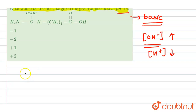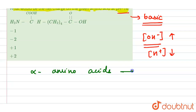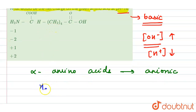We know that in a basic solution, alpha amino acids exist in the anionic form. So here we will talk about this anionic form of the amino acid.